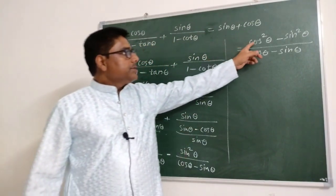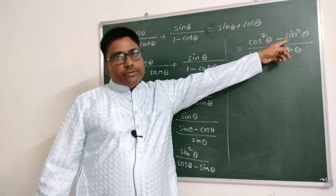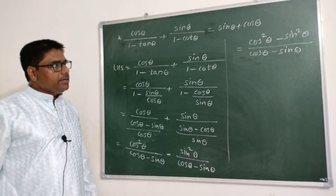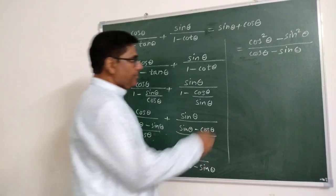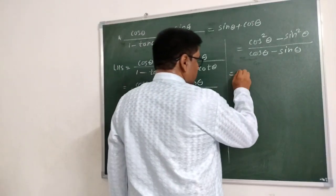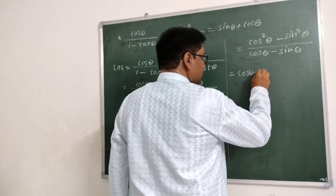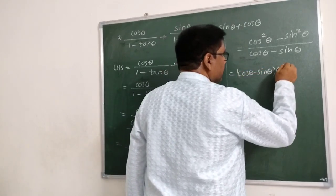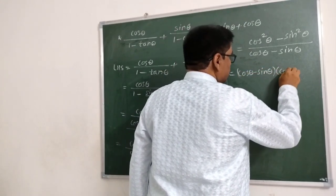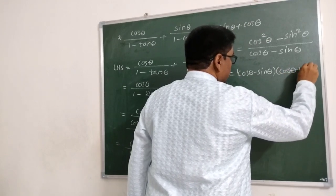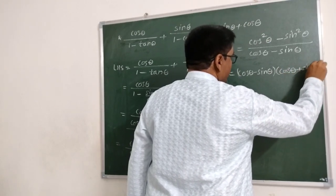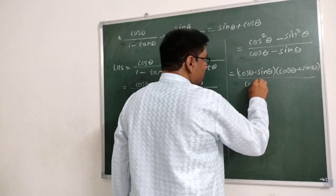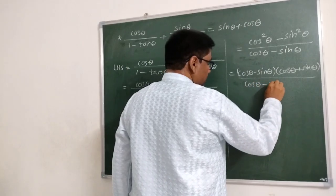Now here the a² minus b² formula can be applied: a² minus b² equals (a minus b)(a plus b). Therefore we get (cos θ minus sin θ)(cos θ plus sin θ) upon (cos θ minus sin θ).